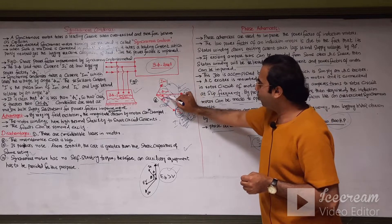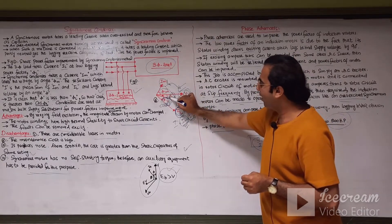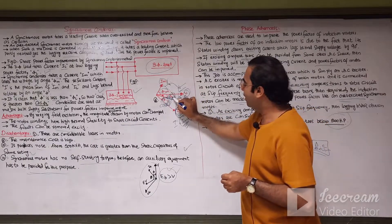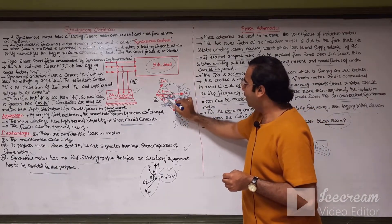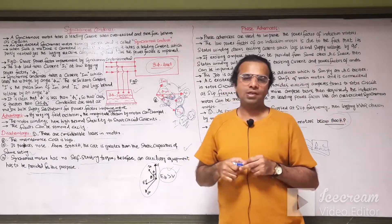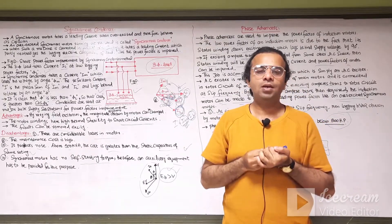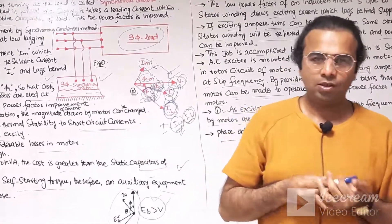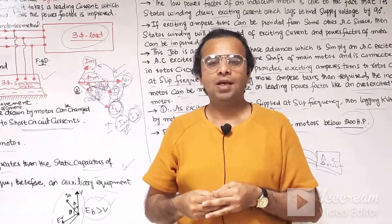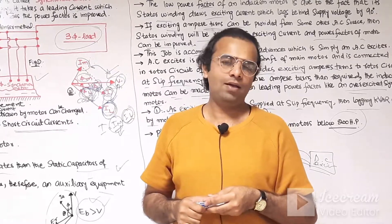This resultant angle phi is less than phi L, so cosine phi represents the improved power factor compared to cosine phi L. This was the whole lecture regarding the synchronous condenser and the phase advancers. I hope you enjoyed today's lecture. Please subscribe to my YouTube channel Shwebhimad Dayo for more informative videos related to electrical engineering. Thank you.